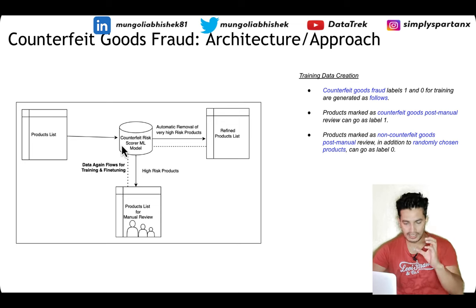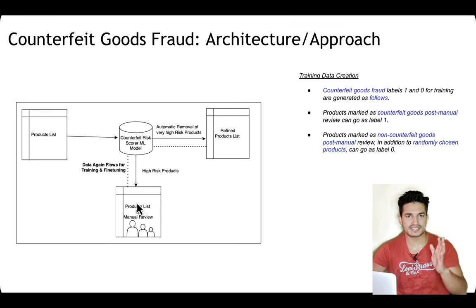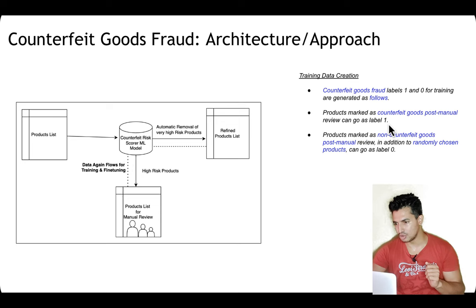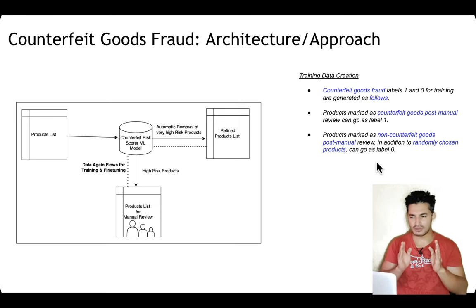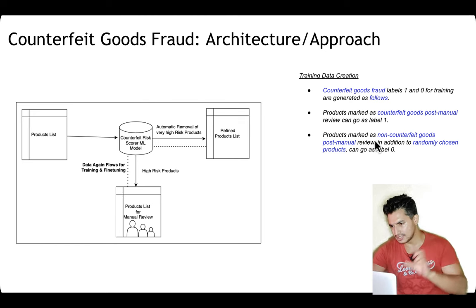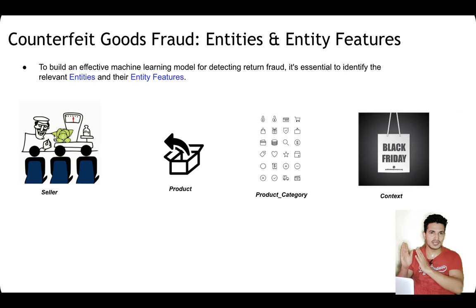Once we know the system architecture, let's define the labels. How are fraud labels of one and zero generated for the training process? Products marked as counterfeit goods after manual review go as label one. Products marked as non-counterfeit after manual review go as label zero. Additionally, some randomly chosen products can also go as label zero. During training, we can do sampling and class balancing for the one and zero classes to train the model appropriately. Those marked counterfeit by manual review are label one; genuine products and randomly chosen products are label zero.